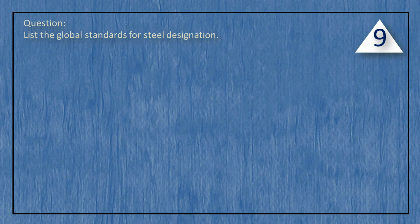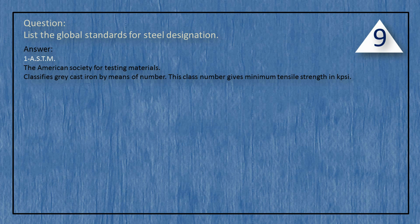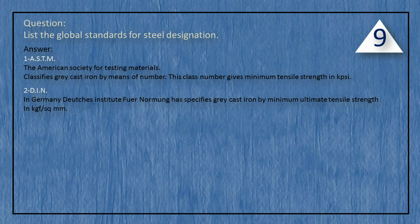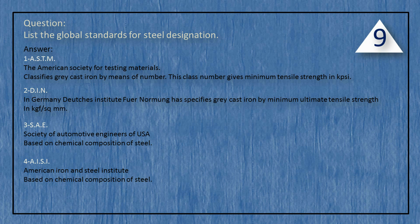List the global standards for steel designation. ASTM — the American Society for Testing Materials — classifies gray cast iron by means of a class number, which gives the minimum tensile strength in ksi. DIN — Deutsches Institut für Normung in Germany — specifies gray cast iron by minimum ultimate tensile strength in kilogram-force per square mm. SAE — Society of Automotive Engineers of USA — classifies steel based on chemical composition. AISI — American Iron and Steel Institute — also classifies steel based on chemical composition.